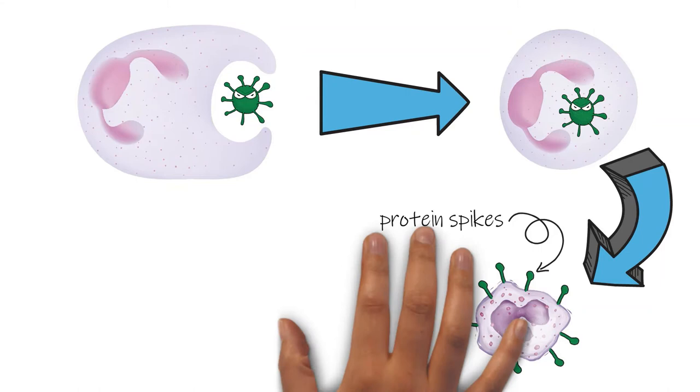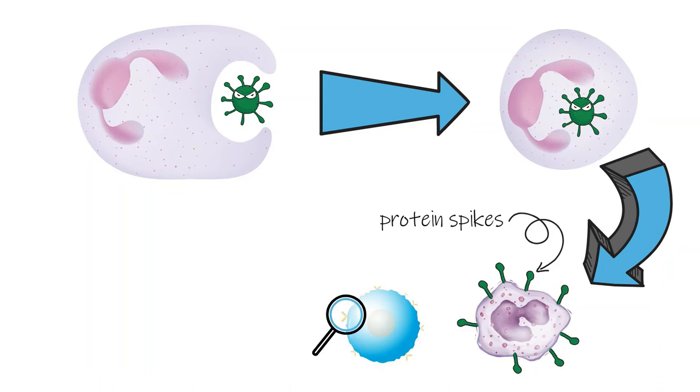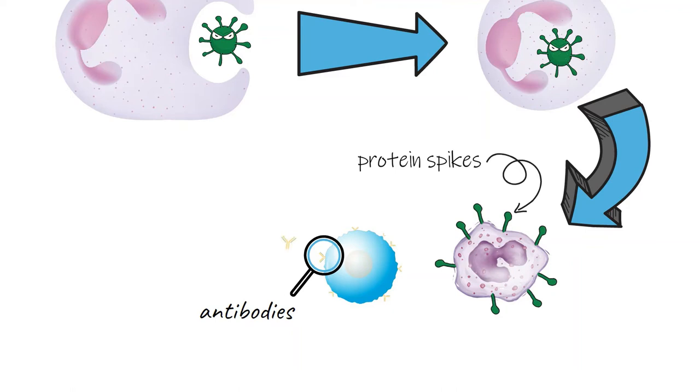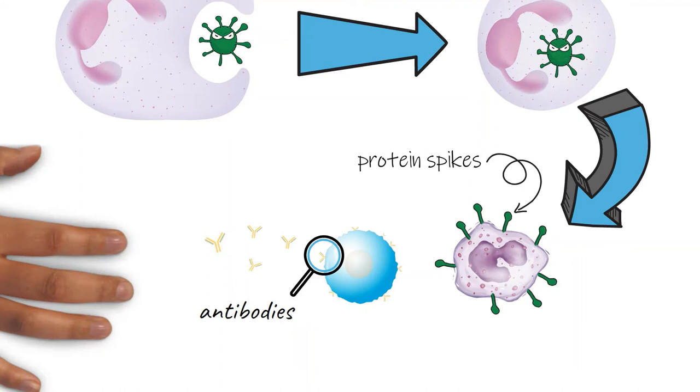The B cells can now start to make antibodies which are a perfect fit for that particular protein spike. Millions of these antibodies are released into the blood. The antibodies stick to the virus so it cannot attach to your cells any longer.